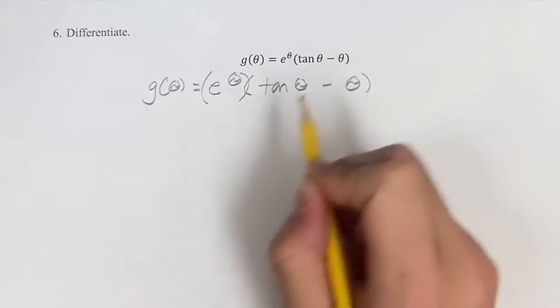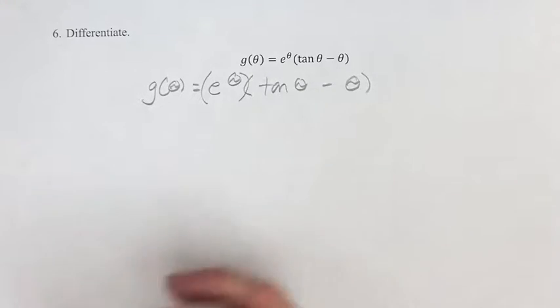So we have two things being multiplied by each other where we have to find the derivatives of each one, so we're going to use the chain rule.